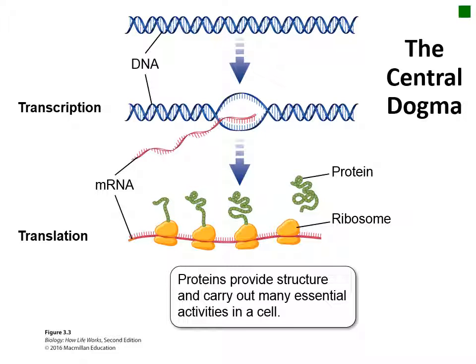In the cell, the process of reading and using the information in DNA is called the central dogma. The central dogma describes the process of taking the nucleotide language of one molecule, DNA, and transferring it to a slightly different version of that nucleotide language in RNA. The process of using the information in DNA as a template to make RNA is called transcription.